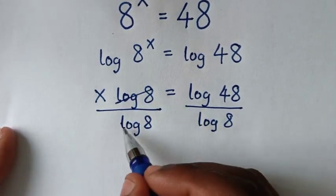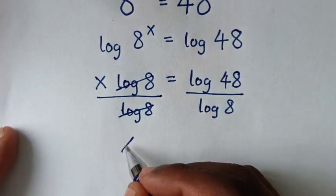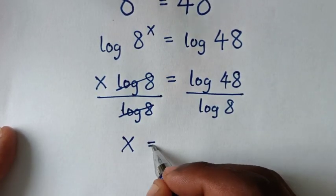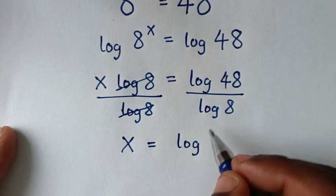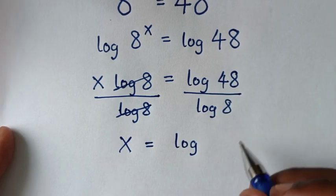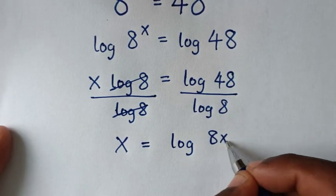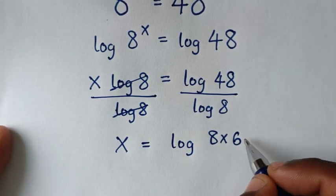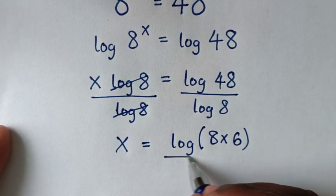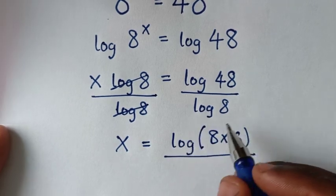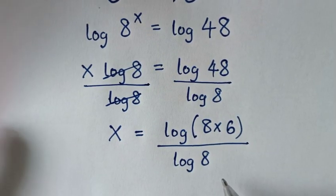So log of 8 on the left side will cancel, and it will be x is equal to log of 48 over log of 8. Now 48 is the same as 8 times 6, so we write log of (8 times 6) over log of 8.